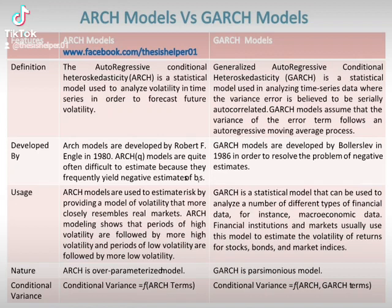ARCH is an over-parameterised model whereas GARCH is a parsimonious model. The conditional variance of ARCH models is equal to functions of ARCH terms.